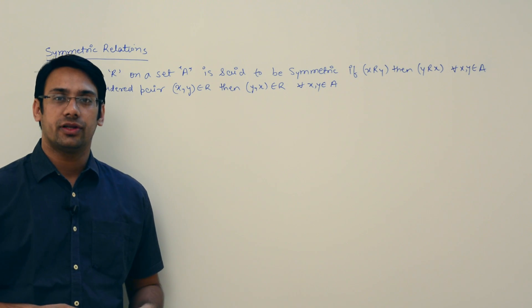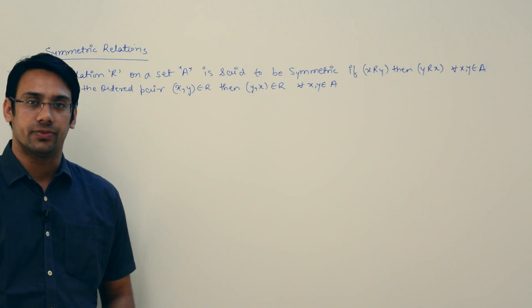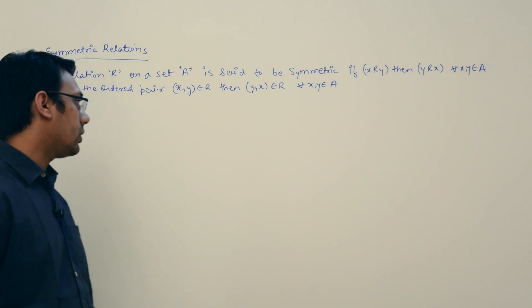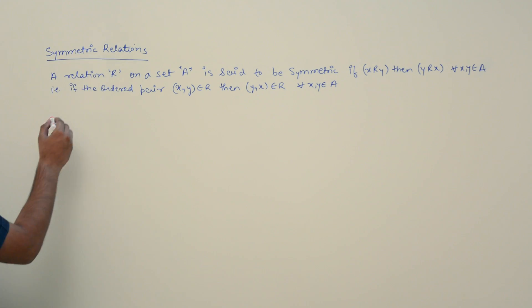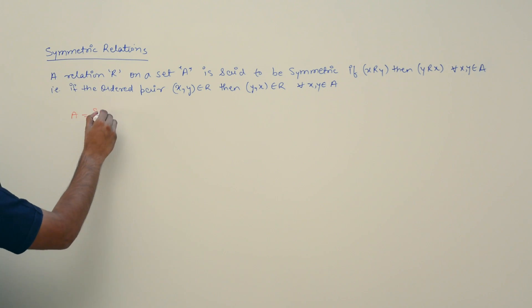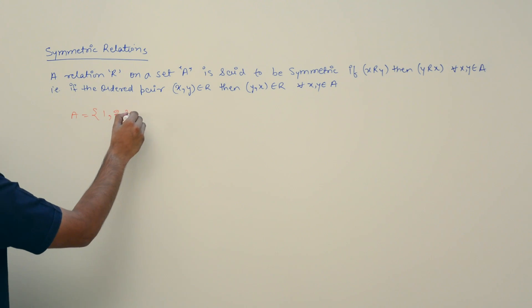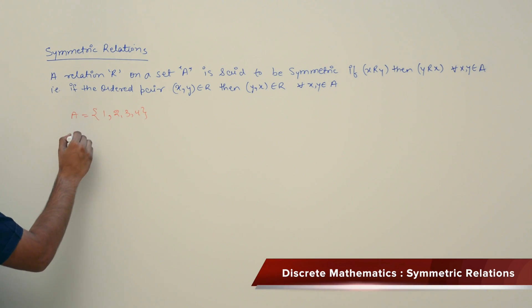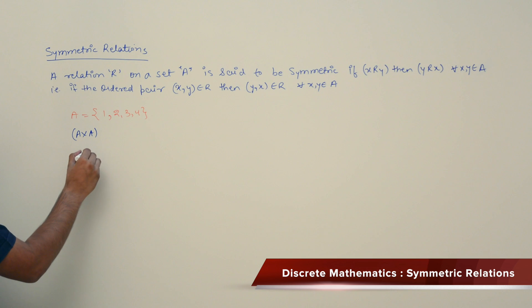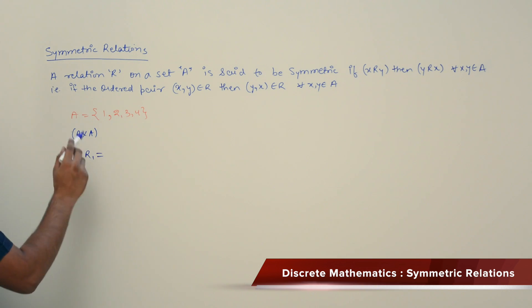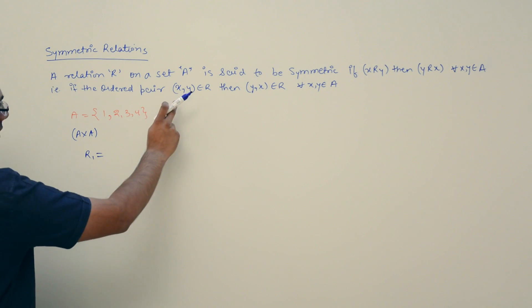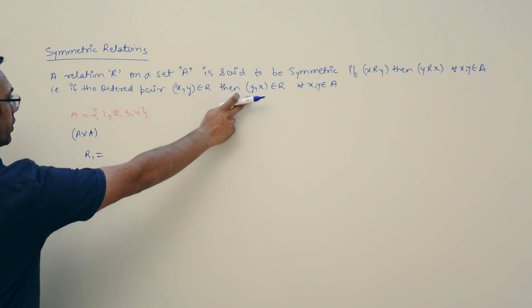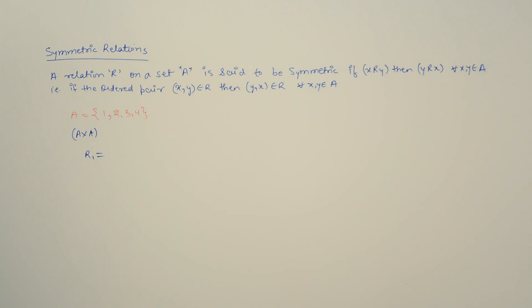Now let us look at the other type of relation called symmetric relations. Assume we have a set A containing {1, 2, 3, 4}. We can define a relation over A cross A. If a relation has to be symmetric, then that relation should contain the ordered pair — if it contains (x, y), then (y, x) should also be there.